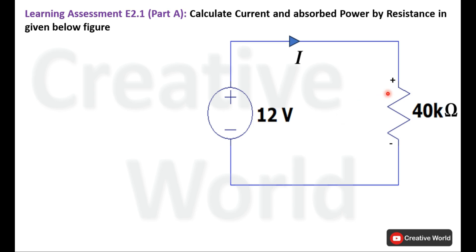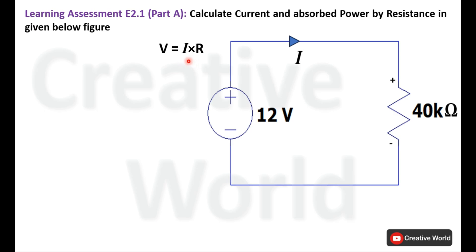First, we will mark polarity symbols across the resistance. These symbols are taken with reference to the voltage. Now we will calculate the value of I through the circuit, and for the calculation of I we will use Ohm's Law, which is V equal to I multiplied by R.